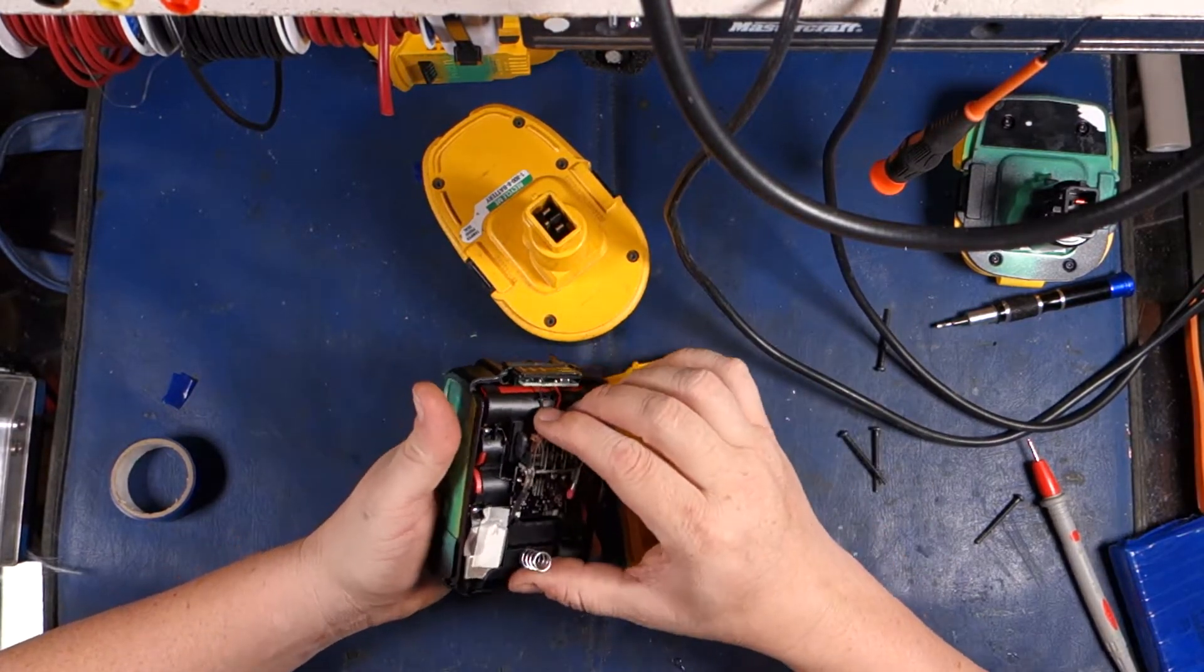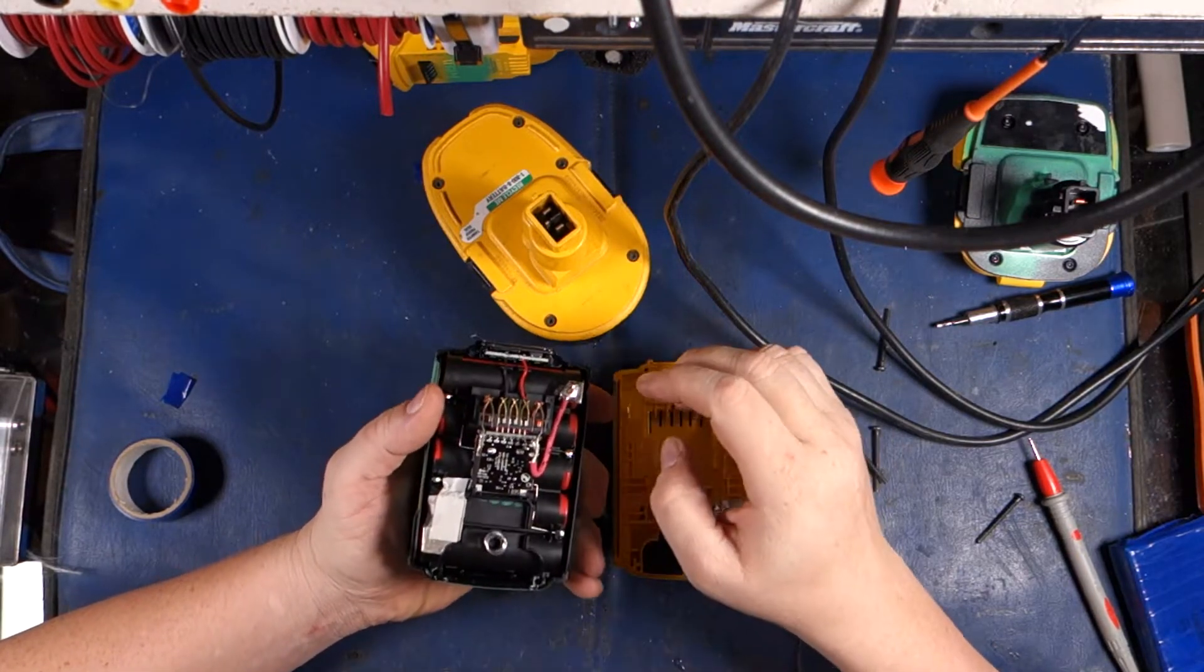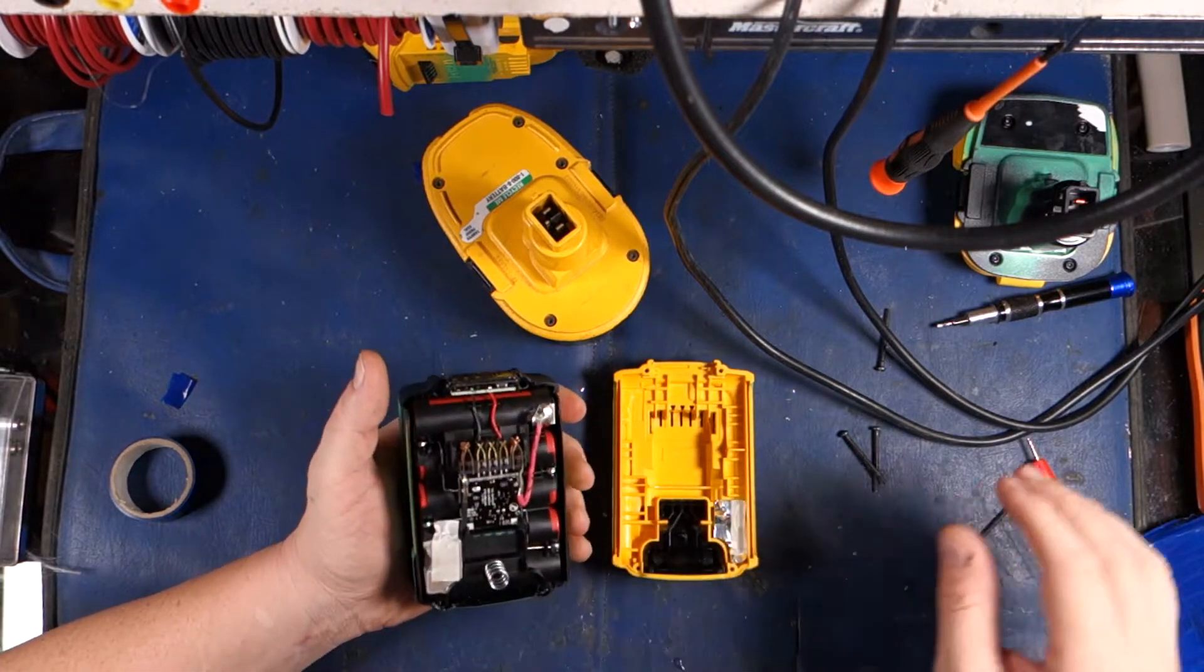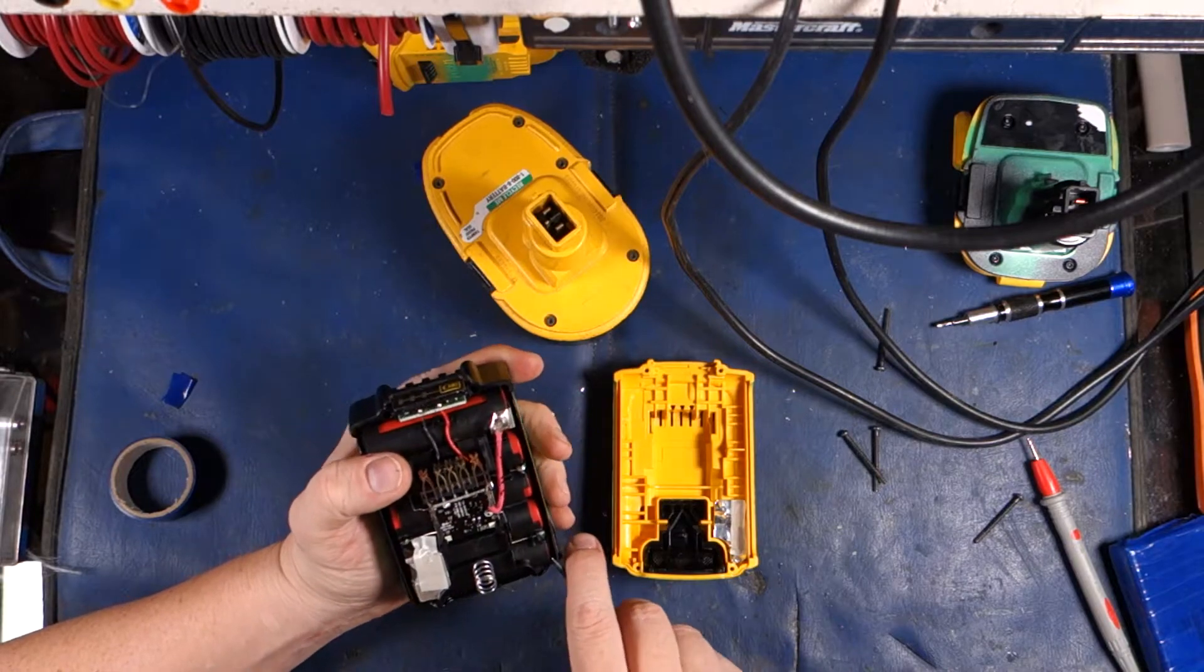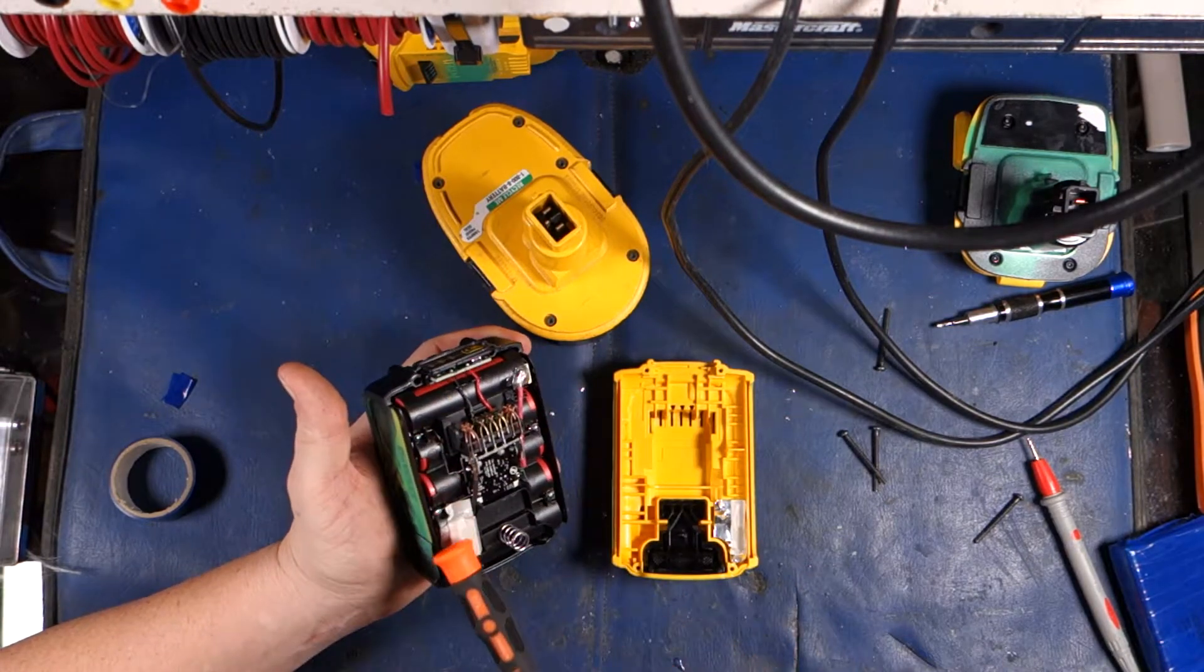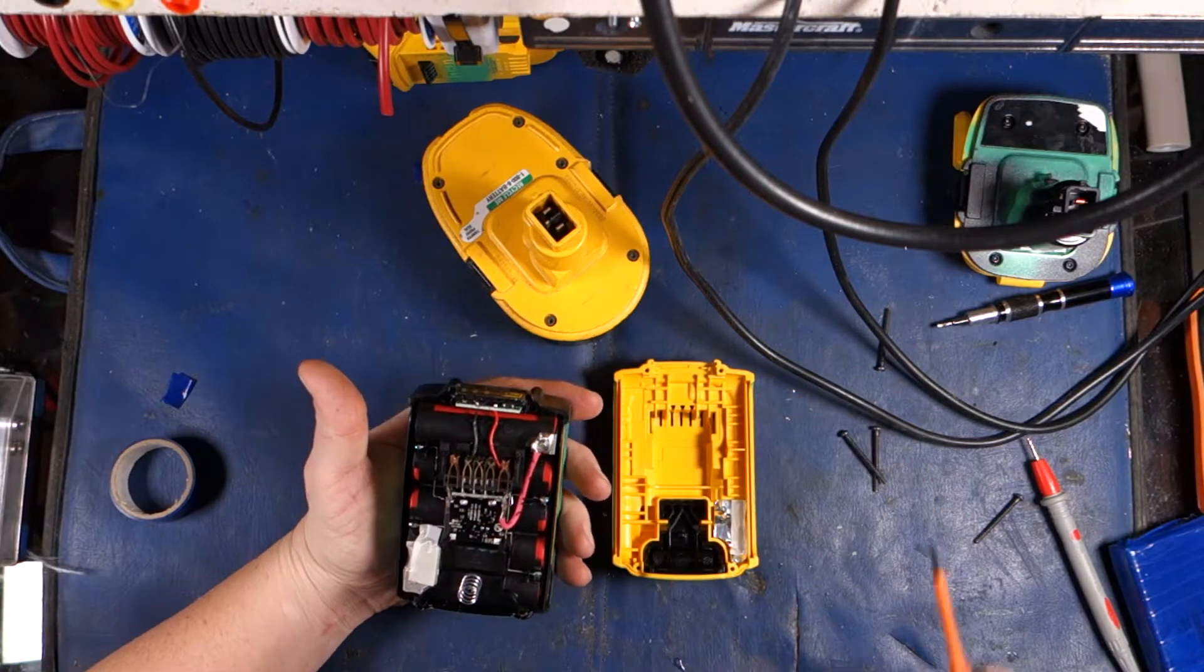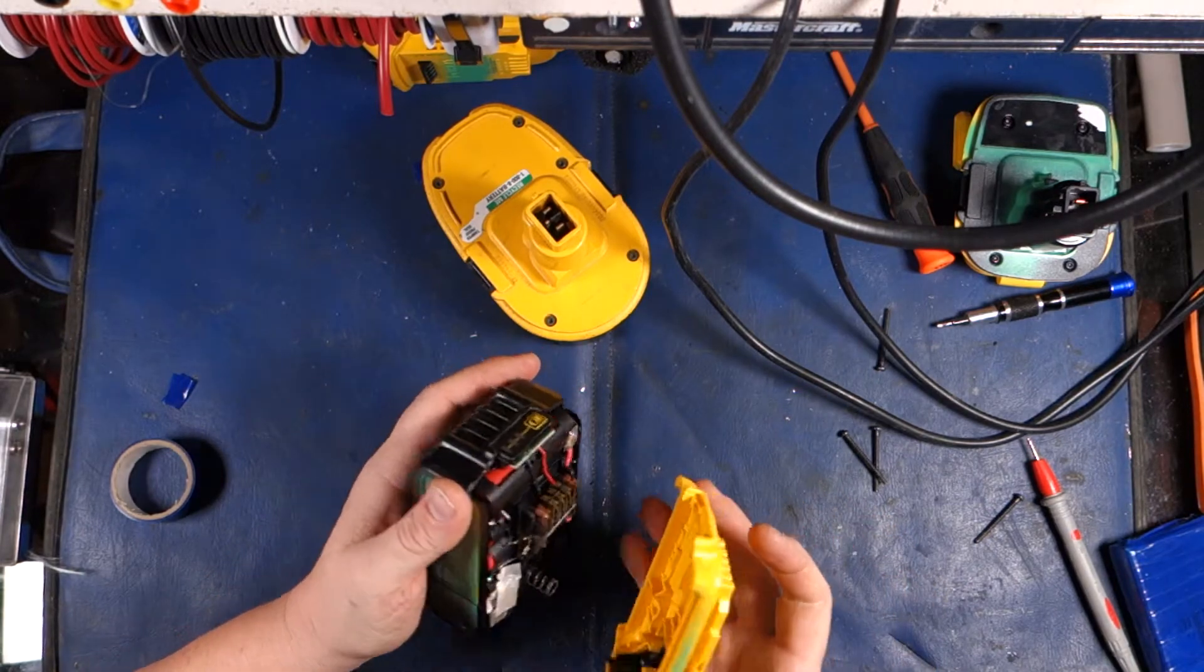So, these are standard 18650s. See that? 18650 cells. I think this is welded. I don't think I can actually get this apart. Let me just check. No, I'm not getting this apart easily, I don't think. So, anyway, you can replace these with lithium iron phosphate cells and be able to get a hell of a lot more torque out of them than you would with this lithium ion garbage.